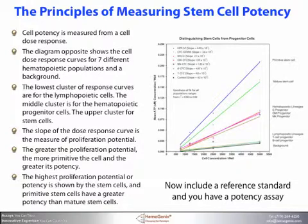Cell potency is measured from a cell dose response. The diagram shown here shows the cell dose response curves for seven different hematopoietic populations and a background shown in black at the bottom. The lowest cluster of response curves are for the lymphopoietic cells, the middle cluster for the hematopoietic progenitor cells, and the upper cluster for stem cells. The slope of the dose response curve is the measure of proliferation potential — the greater the proliferation potential, the more primitive the cell and the greater its potency. The highest proliferation potential or potency is shown by the stem cells.